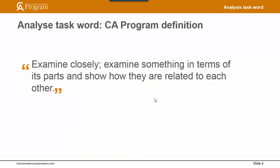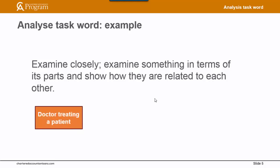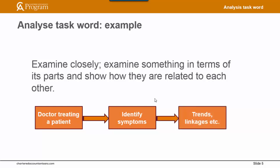This is the definition of the analysis task word that should be used when answering any math exam question. Let's take the analogy of a doctor treating a patient in order to explain the analysis task word. The first step would be to identify the patient's symptoms and understand how they relate to each other, identify any trends, linkages and cause-effect relationships, perhaps how the symptoms may have changed over time. The better the analysis, the more likely it is that the patient's condition can then be correctly diagnosed and a treatment plan developed.